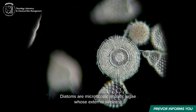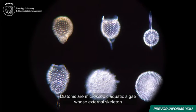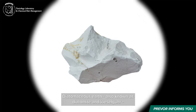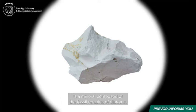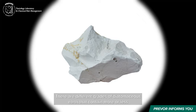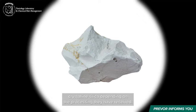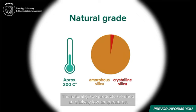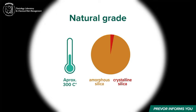Diatoms are microscopic aquatic algae whose external skeleton is composed of porous silica that they absorb from their environment. Diatomaceous earth, also known as diatomite and kieselguhr, is a mineral composed of the fossil remains of diatoms. There are different grades of diatomaceous earth that contain more or less crystalline silica depending on the processing they have received. The natural grade products are dried at relatively low temperatures and are mainly composed of amorphous silica, but can contain up to 3% of crystalline silica.